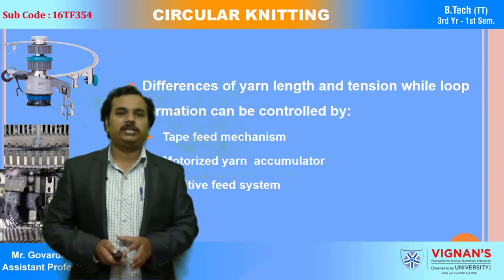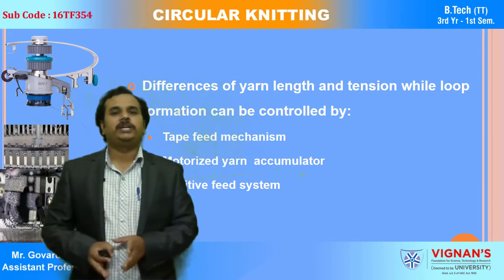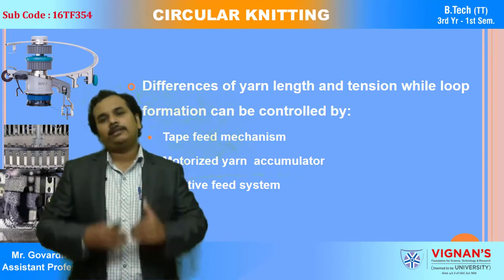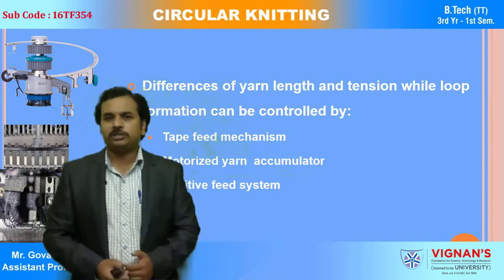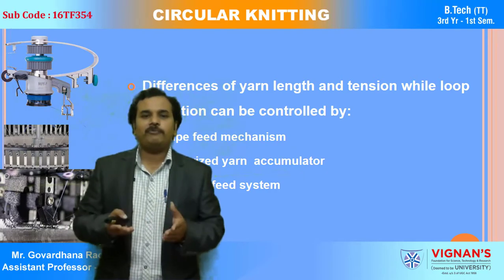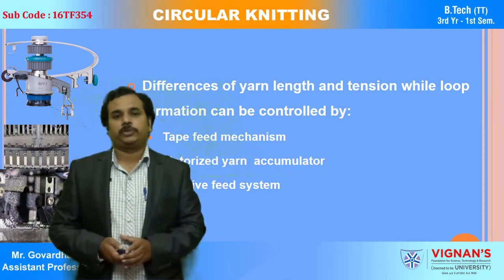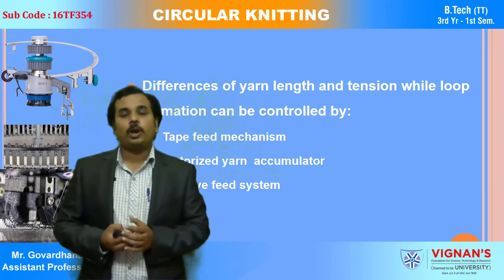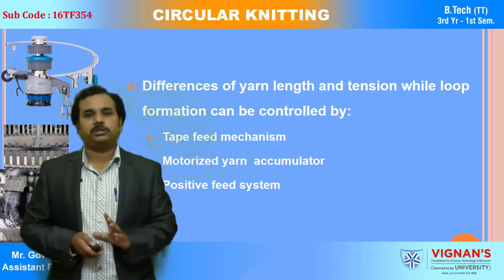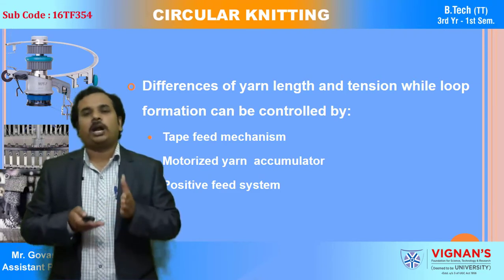Along with these negative feed systems, we have positive feed systems where the differences of yarn length and tension during loop formation can be controlled. There are three different types of positive feeding systems: the first one is called tape feed mechanism, the second is motorized yarn accumulator, and the third is positive feed system. We will see one by one what exactly each of these mechanisms is.